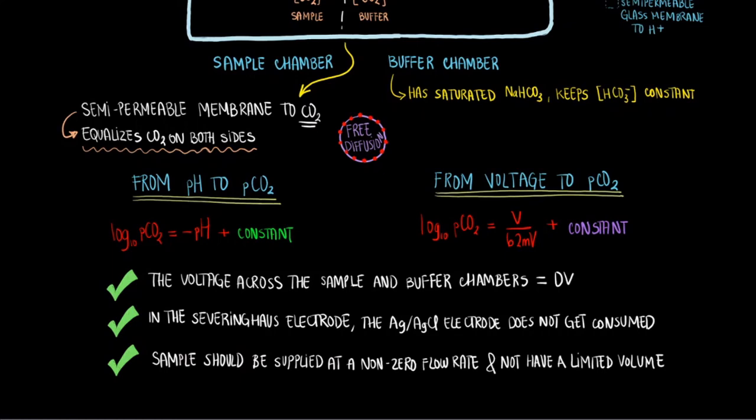Third, your sample should ideally not have a limited volume or a fixed finite volume. It should flow through the chamber with a non-zero flow rate. This is particularly important to ensure that enough CO2 from the sample is provided to the chamber. Otherwise, the sample CO2 will get comparatively diluted by the buffer solution CO2 concentration. We hope that this was helpful and you were able to learn a bit more about the Severinghaus PCO2 electrode.